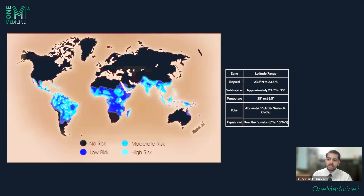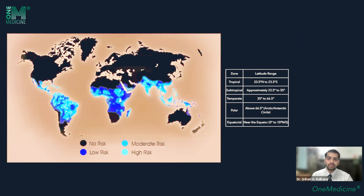Tropical diseases are diseases restricted to the tropical region. Because of high rainfall and dense vegetation, we see a lot of insects and arthropod-borne diseases. The tropical zone spans 23 degrees north and south, the subtropical zone is 23 to 35 degrees, temperate is 35 to 66.5 degrees, and polar is more than 65 degrees.